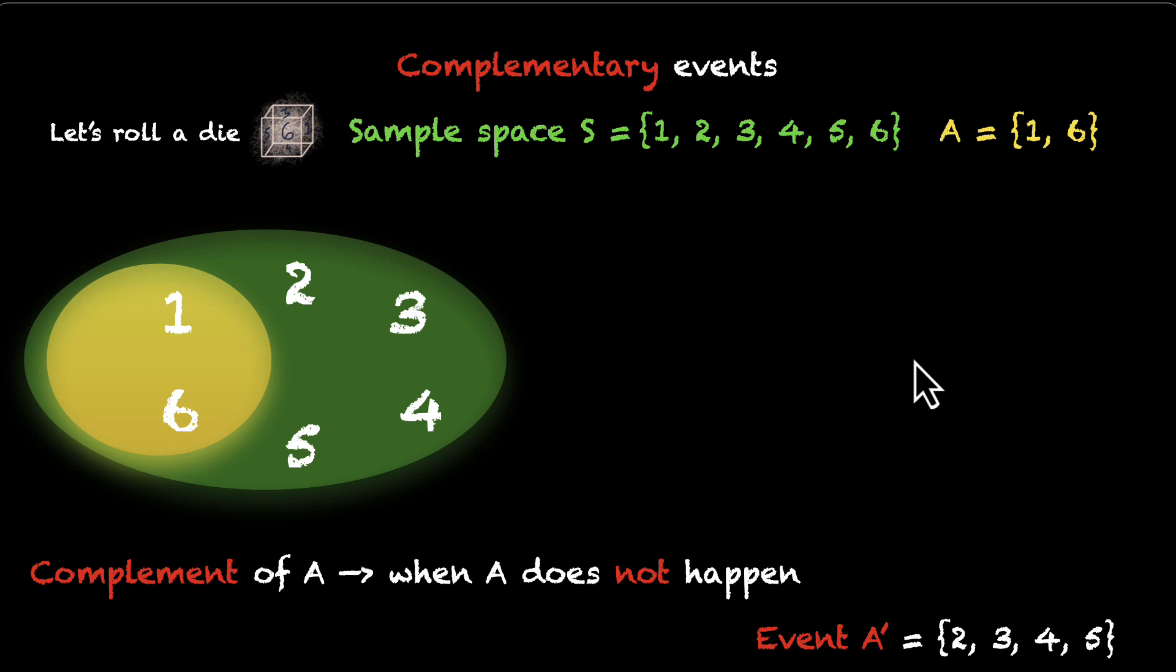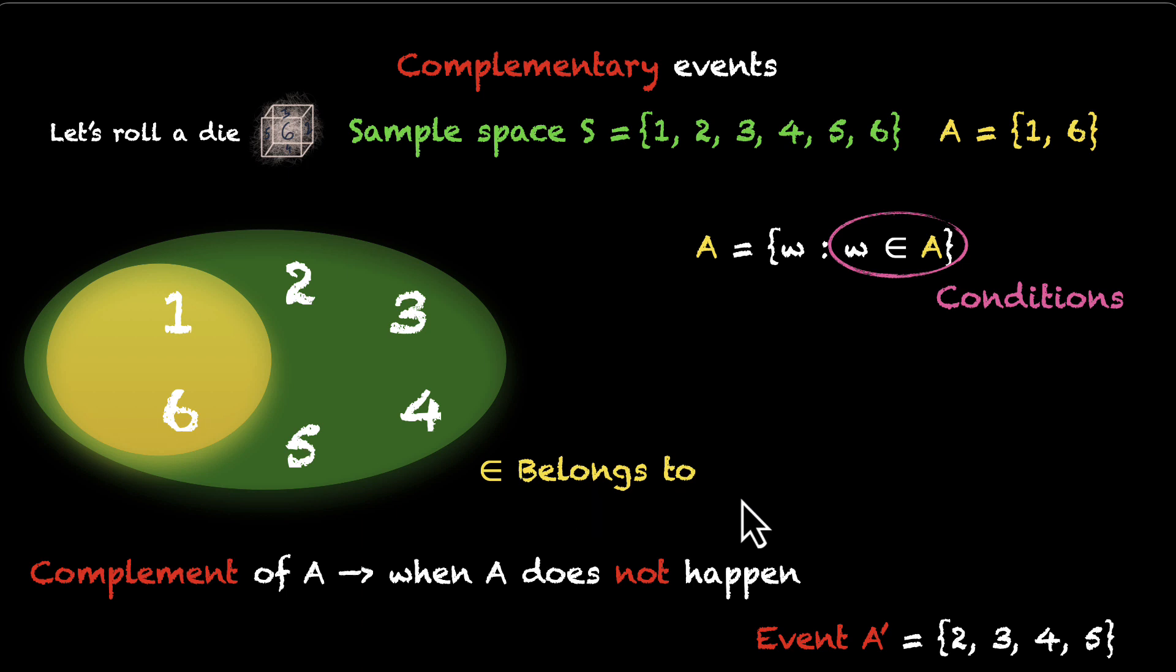Now, let's look at how you write this in math. Again, we're going to leverage your knowledge from sets. The event A is the list of, or the set of, all outcomes W, where W belongs to A. That's how you read this. This is a condition. And the symbol means belongs to. And this symbol means does not belong to. And we're going to need it to define the complement of the event A, which is A dash.